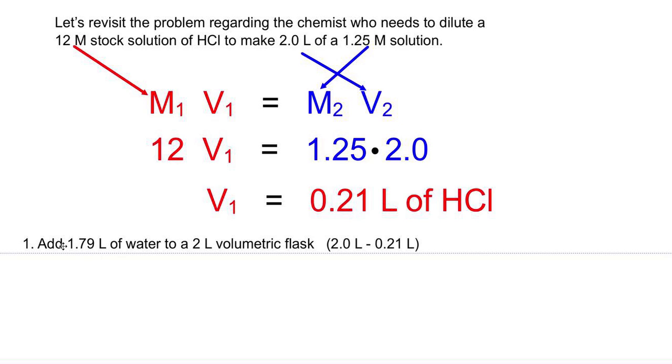So we do some basic math here. We know if our final volume is going to be 2 liters and we're going to add 0.21 liters of hydrochloric acid, the difference is all going to be water. So subtract the acid from the final volume and you'll end up with 1.79 liters. That's how much water to put in the flask.